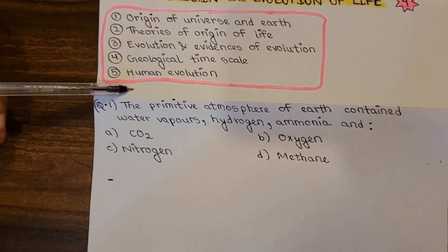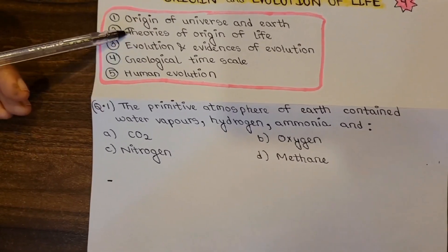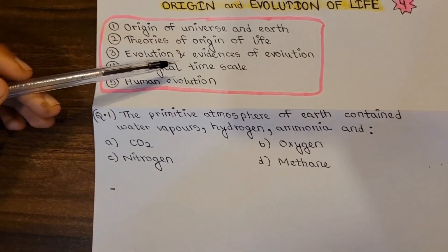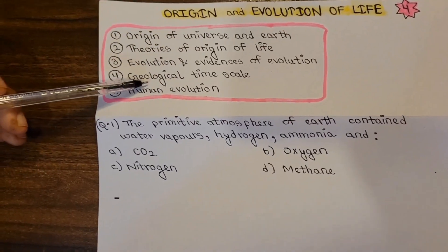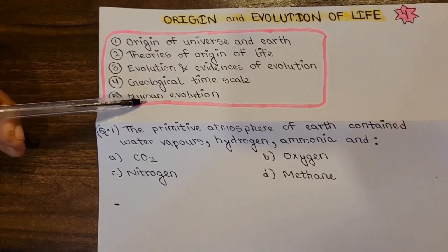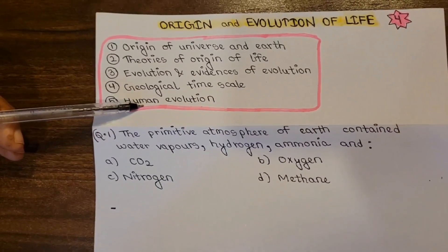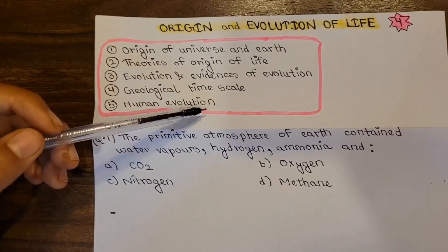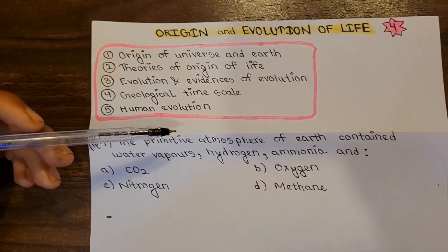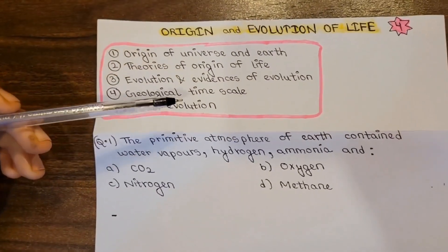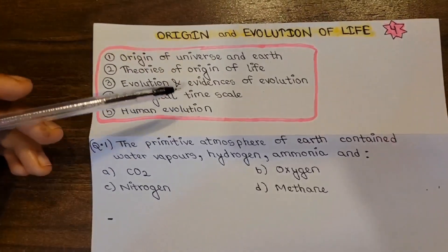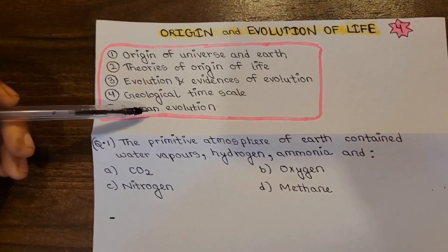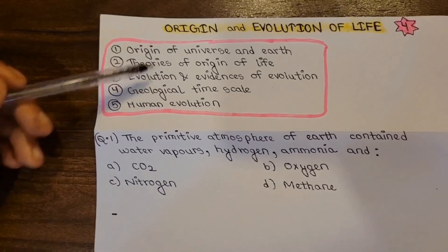We also cover geological time scale — we need to remember the chart with different eras: Pre-Cambrian, Paleozoic, Mesozoic, and the different periods and epoch events within each era. Next is human evolution — hominoids, new world monkeys, old world monkeys, then Australopithecus, Homo habilis, Homo erectus, Neanderthal man, Cro-Magnon man, up to modern man, Homo sapiens. We should remember all of this.